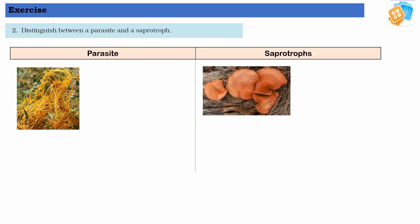Parasites — an example is Amarbel. Here in the picture you can see the Amarbel. They do not have chlorophyll, so they cannot make their own food. That's why they depend upon the host and take all their nutrition from the host body. They harm the host while surviving on it. That's why they are known as parasites.